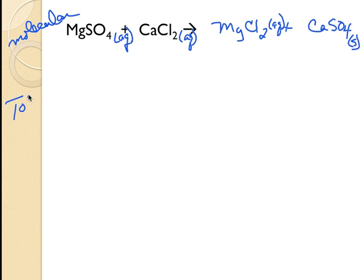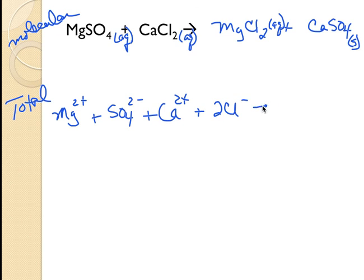Okay, the total ionic is going to show these in solution. We're going to assume that these are all in solution. Going to form the magnesium chloride, which is in solution, and the calcium sulfate, which is a precipitate.